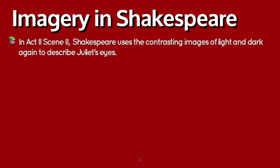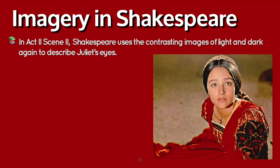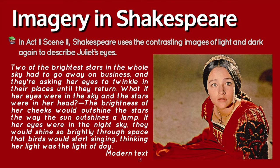Again, imagery in Shakespeare. In Romeo and Juliet, Act 2, Scene 2, Shakespeare uses the contrasting images of light and dark again to describe Juliet's eyes. 'Two of the brightest stars in the whole sky had to go away on business, and they're asking her eyes to twinkle in their places until they return. What if her eyes were in the sky and the stars were in her head? The brightness of her cheeks would outshine the stars the way the sun outshines a lamp. If her eyes were in the night sky, they would shine so brightly through space that birds would start singing, thinking her light was the light of day.'